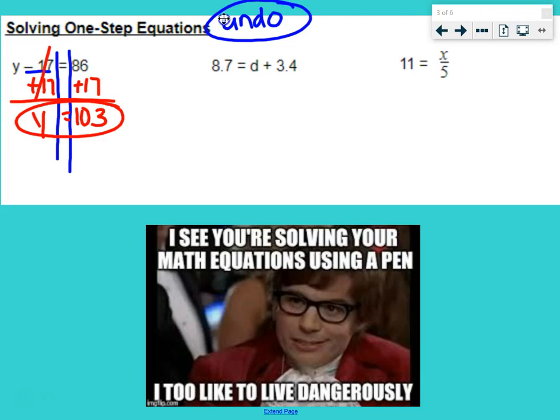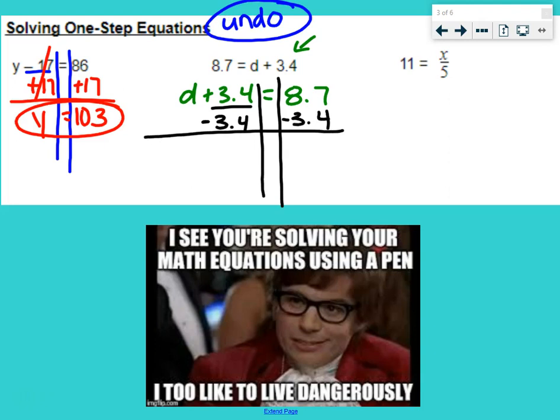Next problem. Now, if you look at this problem, it's a little bit different. Our variable is on the right-hand side of the equation. If that bothers you, you can flip the equation around. You can start by doing d plus 3.4 equals 8.7. We can rewrite the equation, flip the sides, and get started there. That is always allowed. Now, we have plus 3.4. So we need to undo that with a minus 3.4 on both sides. Whatever you do to one side of the equation, you have to do to the other side. 3.4 minus 3.4 makes zero. So we're left with our variable d equals 8.7 minus 3.4 would be 5.3.